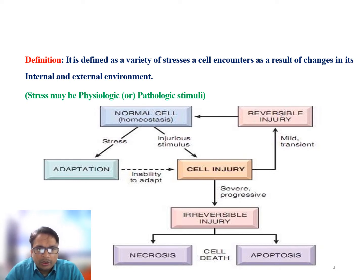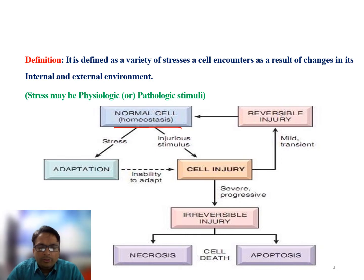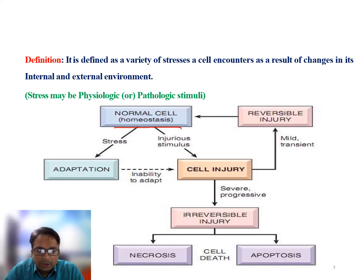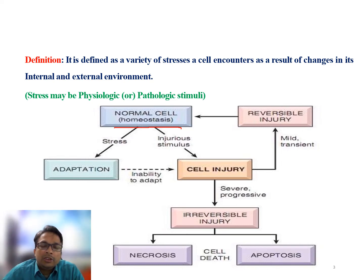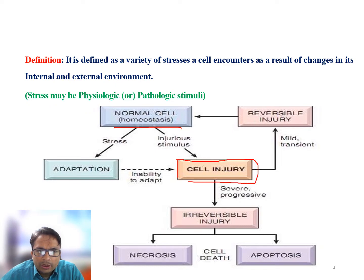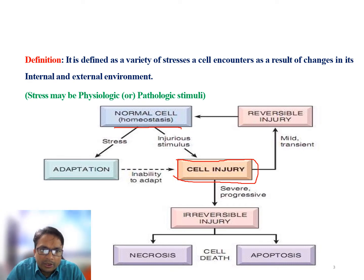To understand cellular injury, consider a normal cell in homeostasis maintained through its internal and external environment with fluid exchange occurring. Now if the cell goes through stress and this stress is quite injurious — for example, a chemical directly applied to the surface of the cell that is toxic — the cell can directly go to cellular injury.